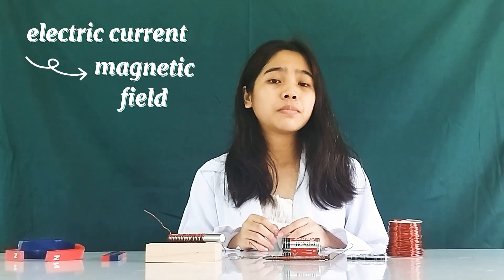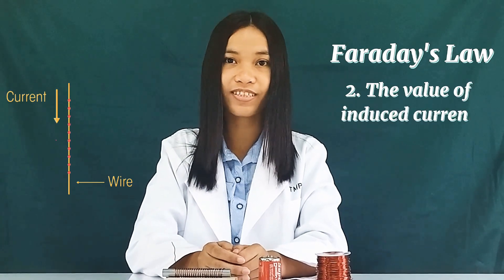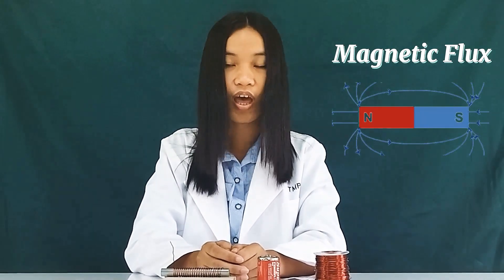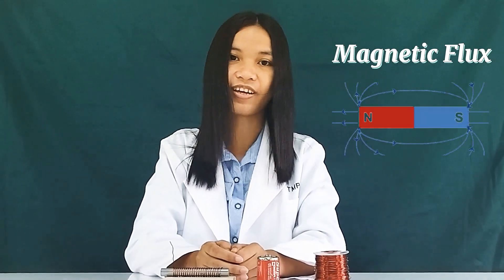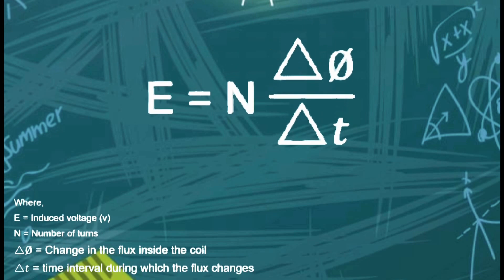Conversely, a changing magnetic field generates an electric current in a conductor. But how will the induced electric current affect the magnetic field of a magnet? According to Faraday's law, the value of the induced current is proportional to the rate of change in magnetic flux. A magnetic flux is a measurement of the total magnetic field which passes through a given area. The mathematical form looks like this: E is equal to N multiplied by the change in flux divided by the change in time.